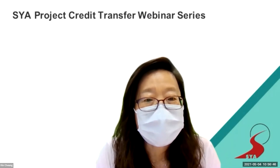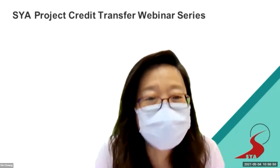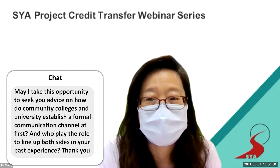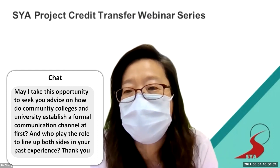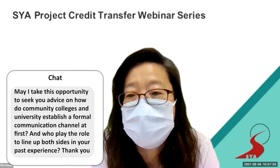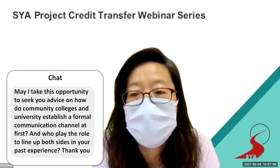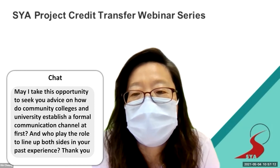Dr. Handel thanks the speakers and turns it back to Ken for audience Q&A. An audience member asks: how do community colleges and universities establish a formal communication channel at first, and who plays the role of aligning both sides? Rose explains that in her previous role as district director for university transfer, she was the single point of contact for all 10 colleges. Universities would be walked through the application process, partnership criteria, and expectations — all housed within academic affairs and signed by the chief academic officer or provost.